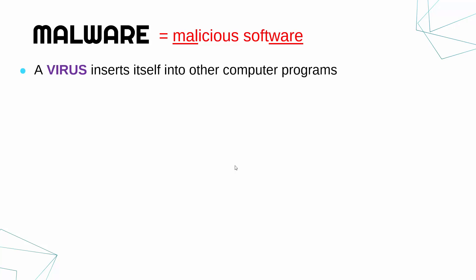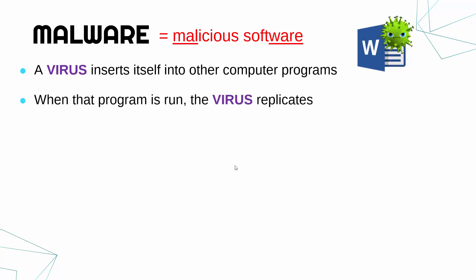A virus will insert itself into other computer programs. You've got programs on a computer which are perfectly fine and legitimate, and a virus will try to insert itself into the code of that program — much like how a real-life virus like COVID or the flu goes inside your body. And much like real-life viruses, they replicate: when you run that program, the virus code copies itself and inserts itself into other programs, spreading quite quickly by jumping around your computer.